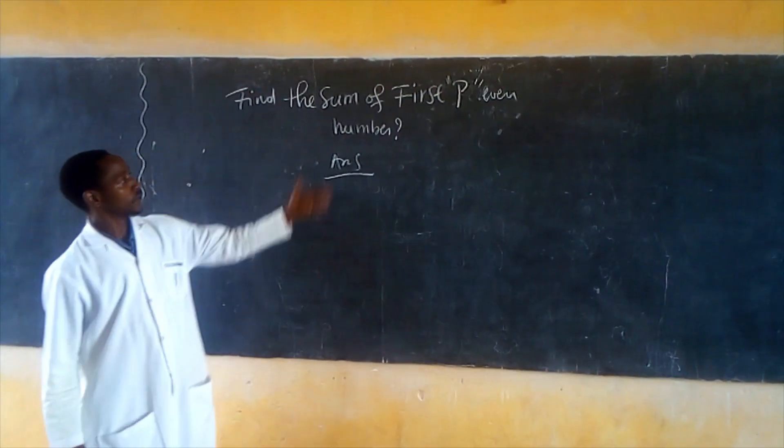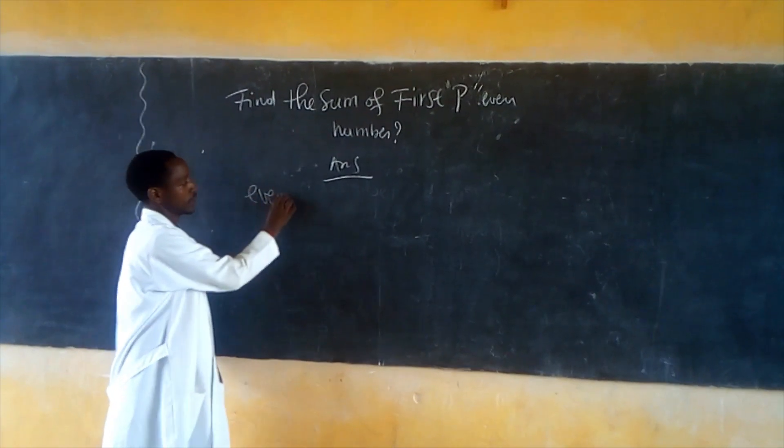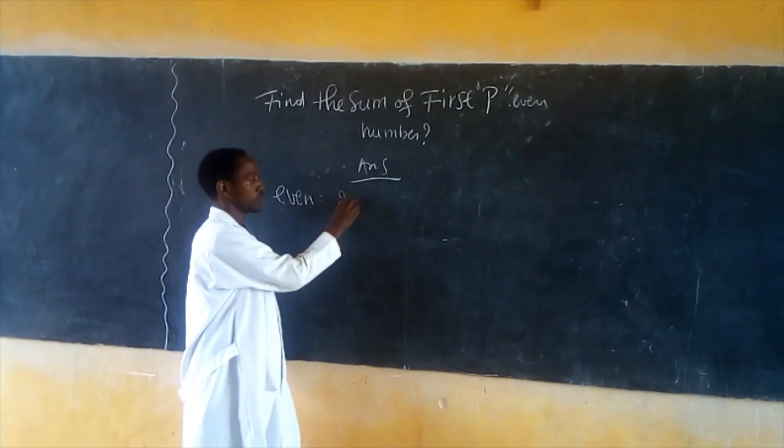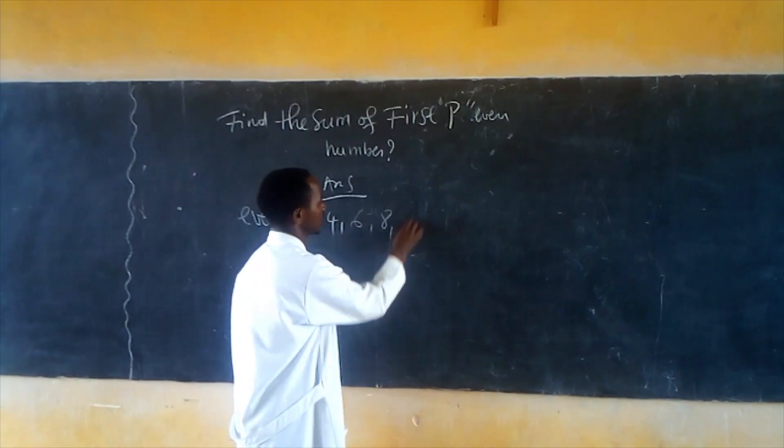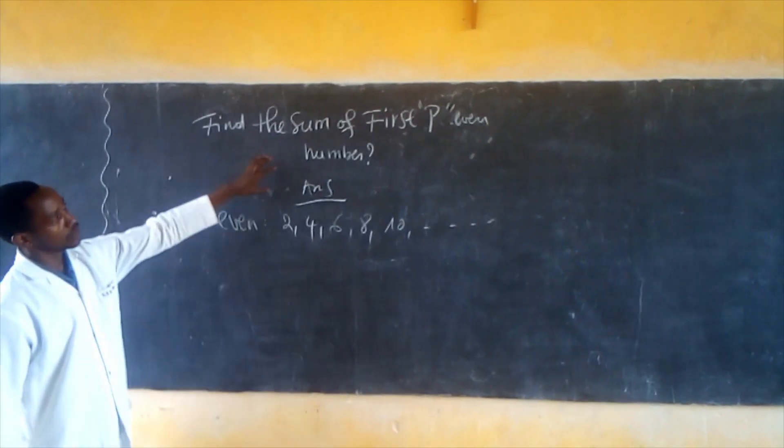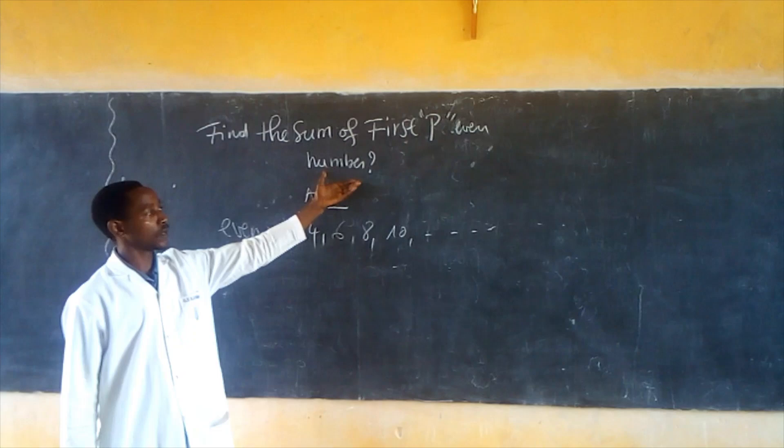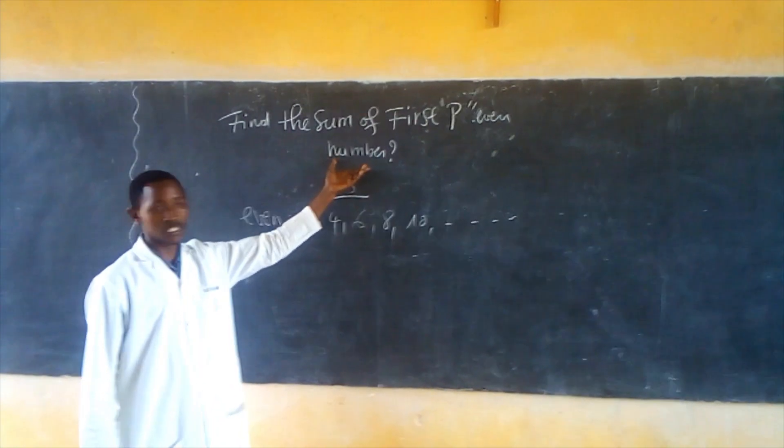The even numbers we know are 2, 4, 6, 8, 10, and so forth. So you need to check if it is an arithmetic sequence or geometrical sequence.